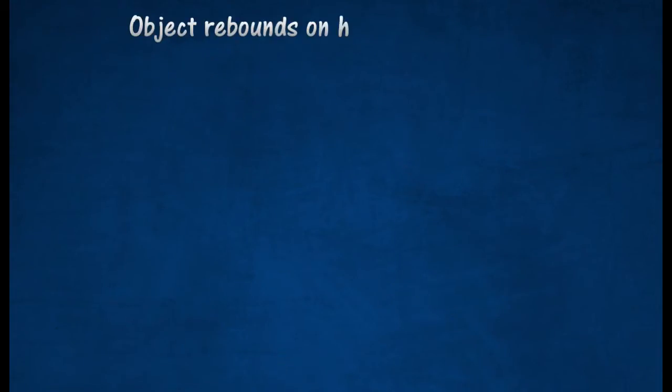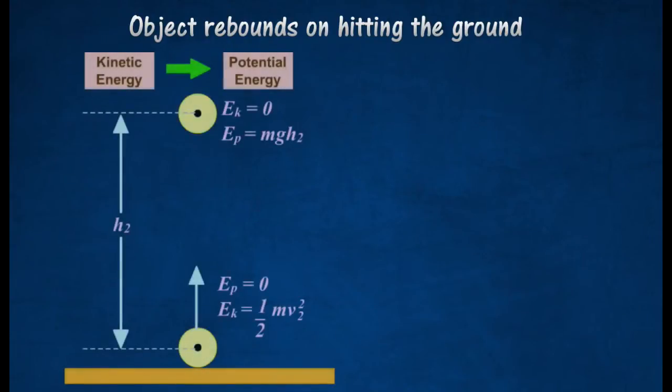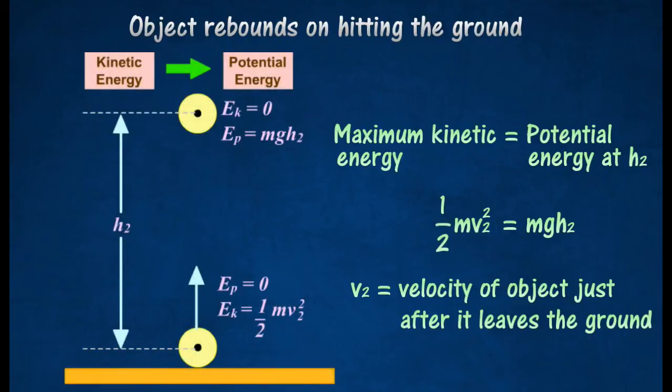If the object rebounds to a height of H2 on hitting the ground, its maximum kinetic energy while moving upwards will be equal to its potential energy at a height of H2.